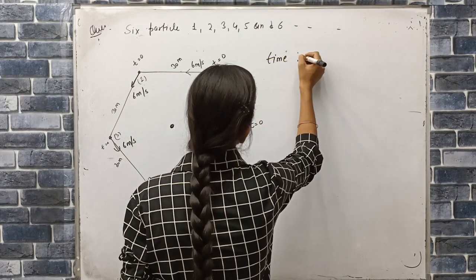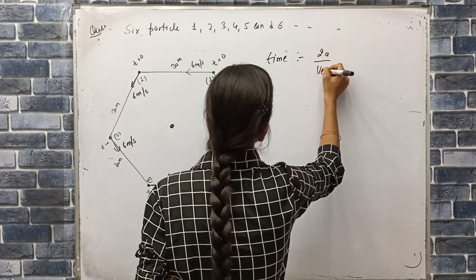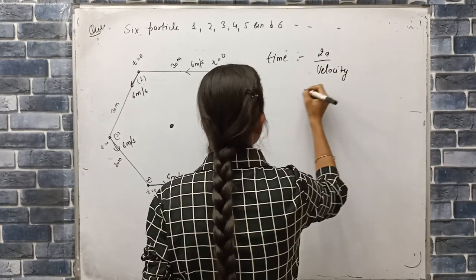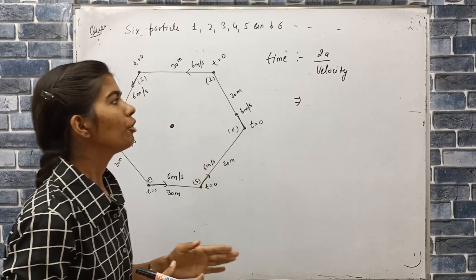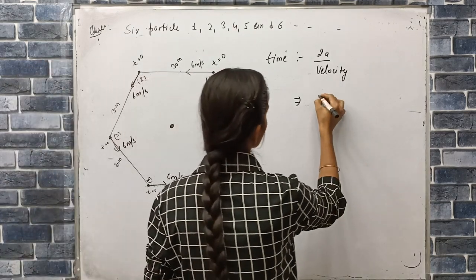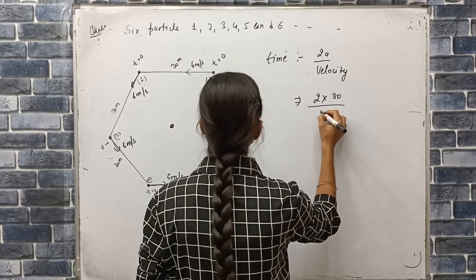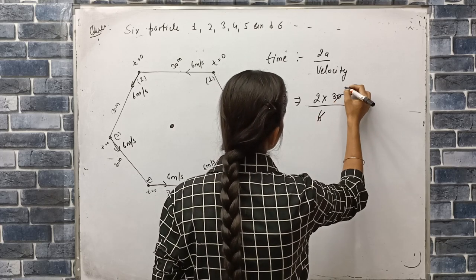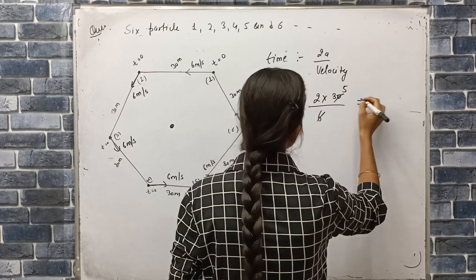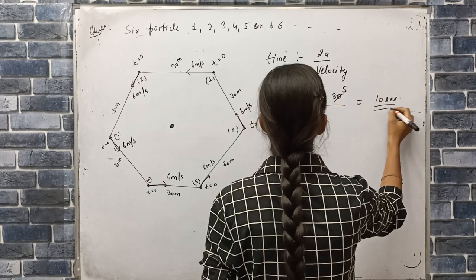To time jho hooga, hoh maare paas kya hoday ka 2a divide by me velocity. To 2 into me, ek inna mahar paas 30, divide by me velocity is 6. To humahar paas jho time laghe ga, hoh kitna hajaega? 10 seconds.